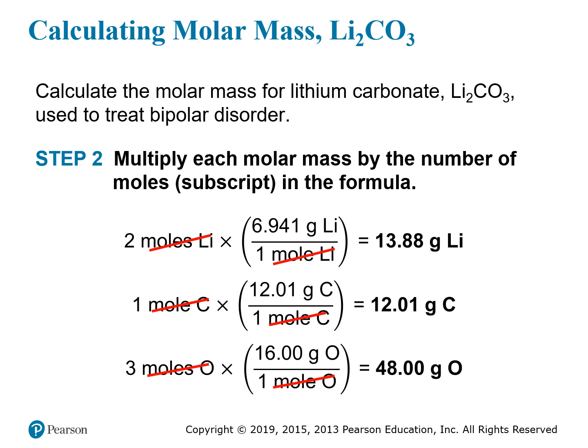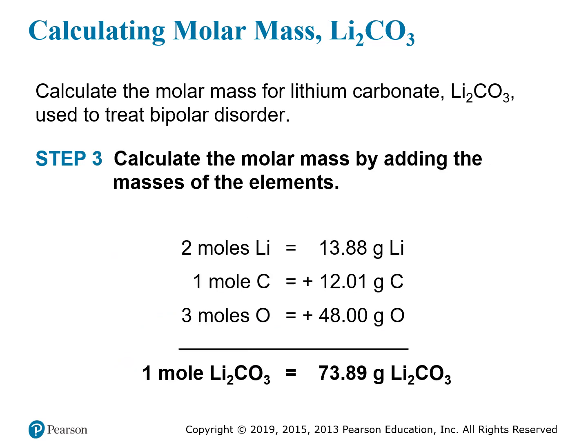The second step is to multiply the mass of each element by the subscript indicating how many of those atoms are in the formula. In lithium carbonate, there are two lithium atoms, so 2 × 6.941 = 13.88 grams. There is one carbon, giving 12.01 grams, and three oxygens, giving 3 × 16 = 48 grams. These are the contributions from the three elements. To get the total mass, we add them together: two moles of lithium plus one mole of carbon plus three moles of oxygen gives one mole of lithium carbonate.